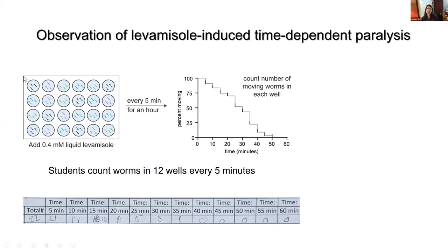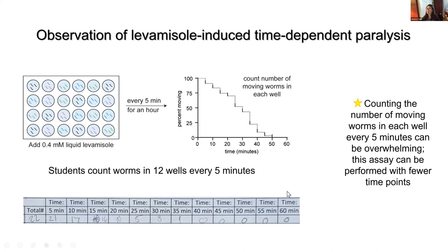Students count the number of moving animals in each well every five minutes. I typically find that students can assay 12 wells every five minutes. So students will assay the first half of the plate in one hour, and then in a subsequent hour, they assay the bottom half of the plate, again recording the number moving every five minutes. For students who don't have a lot of lab experience, counting every five minutes can be overwhelming, and so this assay can also be performed with fewer time points — say counting the worms every 10 minutes.